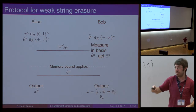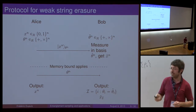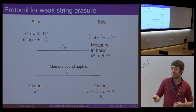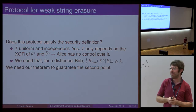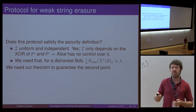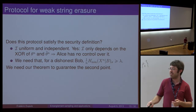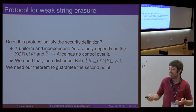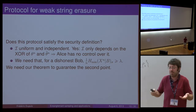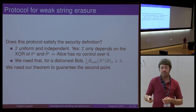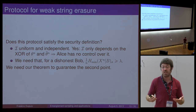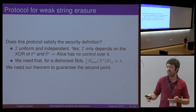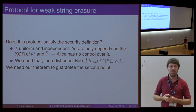At the output, Bob was able to guess the right basis half the time on average, so he outputs the substring where he guessed correctly — the bits at those positions. Alice's output is just the string she picked initially. The first security requirement is pretty easy to verify: the subset is uniform and independent because Alice has no control over Bob's choice of basis. The second requirement — that the min entropy bound is satisfied for whatever a dishonest Bob does — is the tough one, and this is where our theorem comes in.